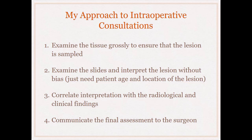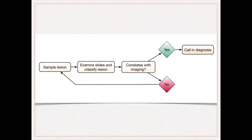If your interpretation correlates with radiology, you communicate the final assessment to the surgeon. The algorithm is: sample the lesion, examine the slides and classify the lesion, correlate with imaging, and if it correlates, call in the diagnosis. If there's a lack of correlation, you probably need more sampling — either sampling the tissue they sent, or calling them and saying it's non-diagnostic and you need more tissue.